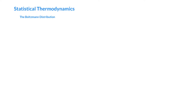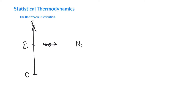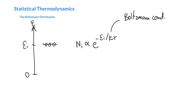We need to start by talking about the Boltzmann distribution, which we've seen and used a few times before. Imagine we've got an energy diagram here, and we're going to set zero here. We've got some state with an energy E sub i, and we want to know the population in that state — maybe the number of molecules in that state. We can use the Boltzmann equation: the number in state i is proportional to e to the minus that energy divided by kT. k is our Boltzmann constant, with a value of 1.381 times 10 to the minus 23 joules per kelvin.